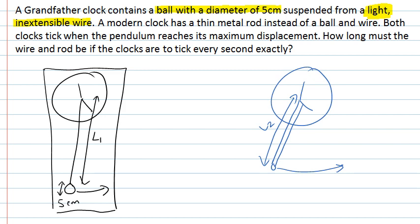And we have to think about is the ball a point mass? Well it has a diameter of 5cm so it's technically not a point mass. But we can approximate it as a point mass if the diameter of the ball is much, much smaller than the length of the wire. And in this case if you have a grandfather clock, generally grandfather clocks are pretty tall. So we can approximate this as a simple pendulum.